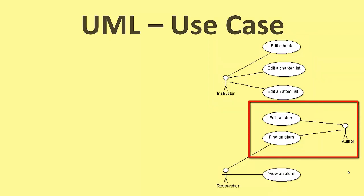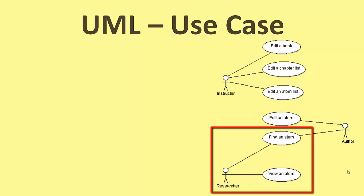Then we come to those who want to author atoms. They need to be able to choose from the atom list, and edit a particular atom. And to do that, they need to be able to find an atom. Finally, we've got something I'm calling researcher, the person who wants to read the atoms themselves. And the researcher will want to find an atom, and view the atom.